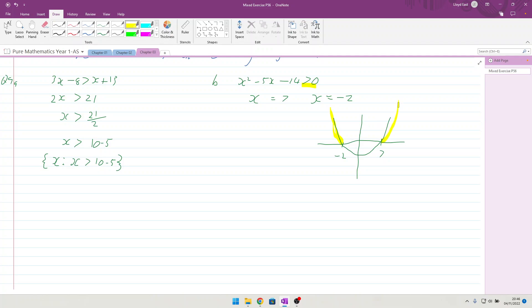They want to know where this curve is greater than 0. All of that part of the curve is greater than 0, and all of this part is greater than 0. Which means we want to have an x that is less than minus 2, and also the x's that are greater than 7.